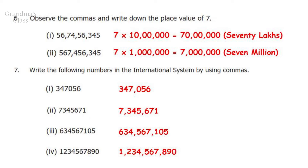Question 7: Write down the following numbers in the international system by using commas. The first number can be written as 347,056. The second number can be written as 7,345,671. The third number can be written as 634,567,105. And the last number can be written as 1,234,567,890.